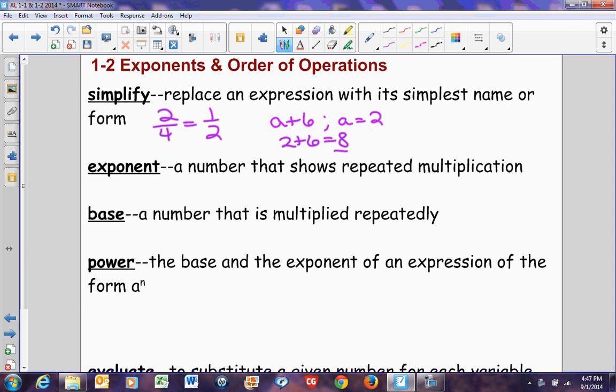An exponent is a number that shows repeated multiplication. If I have 3 to the fourth, that means I'm going to repeat 3 four times. It literally means 3 times 3 times 3 times 3. 3 multiplied by itself 4 times. If we were to simplify that, we would multiply it out. 3 times 3 is 9. 3 times 3 is 9. And 9 times 9 is 81. So the simplified version of 3 to the fourth is 81.